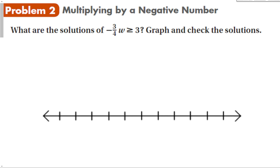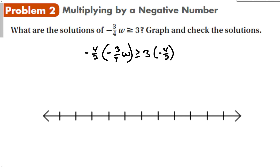Now for this one, I'm going to multiply both sides by a negative number. We have negative 3 over 4 times w is greater than or equal to 3. To solve this, I multiply both sides by the reciprocal, negative 4 over 3. Because I'm multiplying both sides by a negative number, I flip the sign. Those all cancel and we have w is less than or equal to negative 4. I place a solid dot because it says or equal to, and the graph goes to the left.